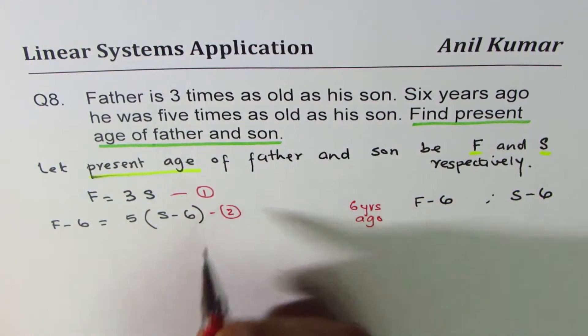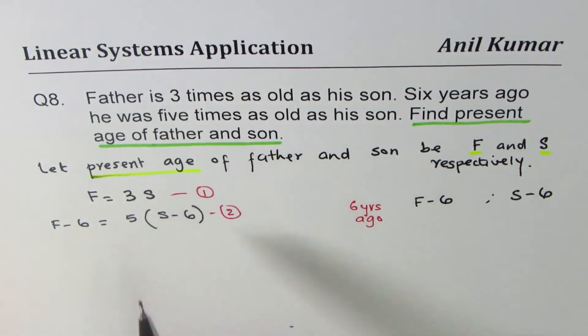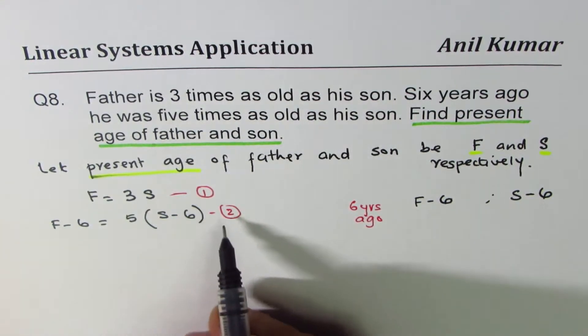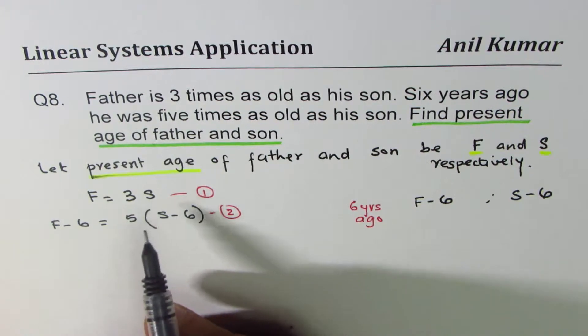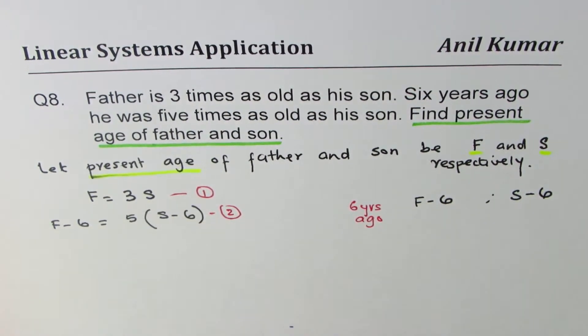I'd like to go through this video once again. Try to understand how we got these two equations. They are very critical. But once you get these two equations, then it is kind of simple. Once you have two equations, two variables, you can always solve for the two variables. You can pause the video, find the solution, check my answer.